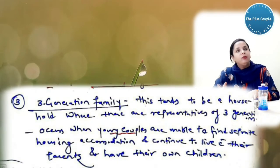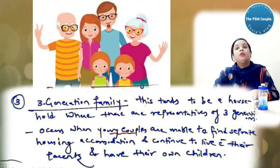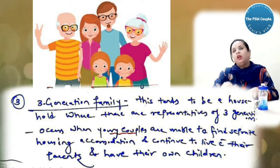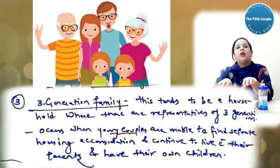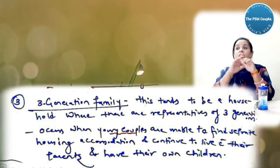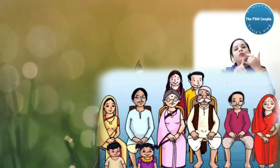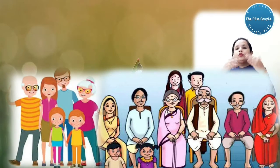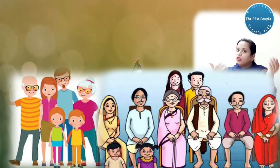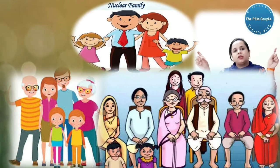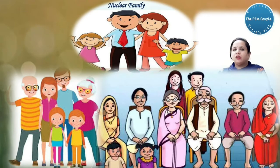Now what is the three generation family? It occurs when young couples are unable to find separate housing accommodation and continue to live with their parents and have their own children. Like the parents are there, the married couple is there, and the married couple children are there. One, two, three, three generations are there. Nuclear means only one couple and their children are living.